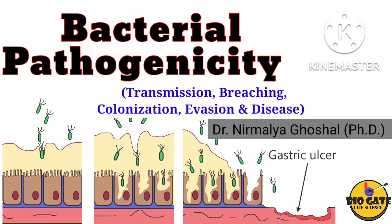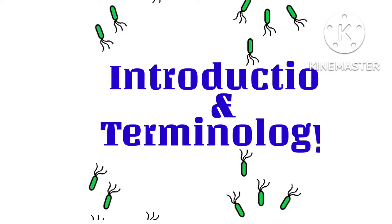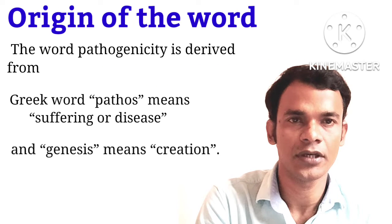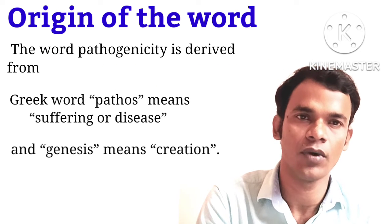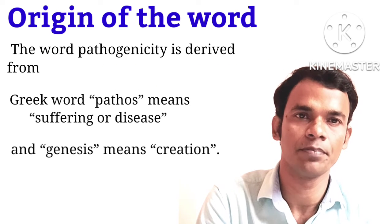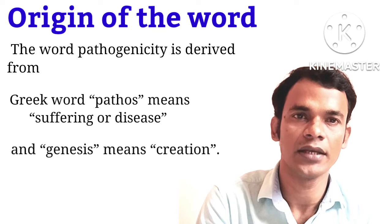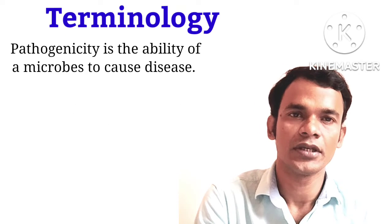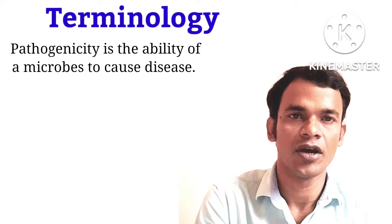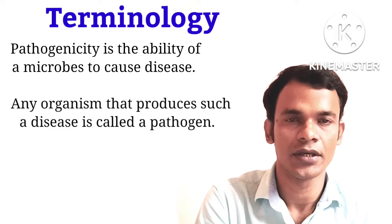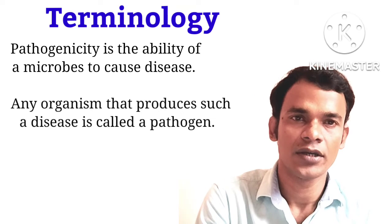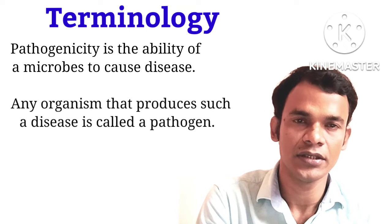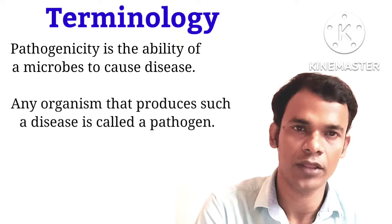Welcome back. In this video I will discuss about microbial pathogenicity. The word pathogenicity is derived from the Greek word pathos, meaning suffering or disease, and genesis, meaning creation. Pathogenicity is the ability of a microbe to cause disease. Any organism that produces such a disease is called a pathogen.